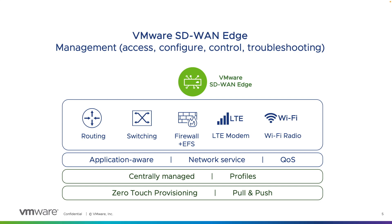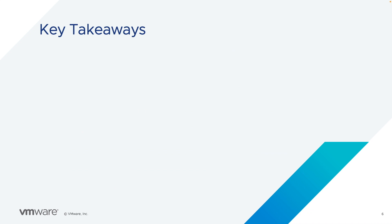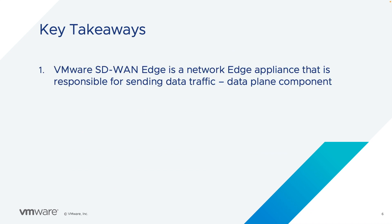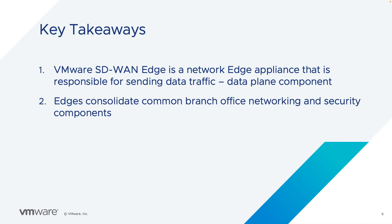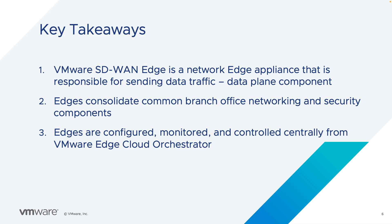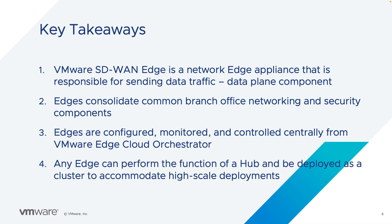This can all be centrally managed through VMware Edge Cloud Orchestrator to control how the edges are accessed, configured, monitored, and remotely troubleshot. The key takeaways for this video are that VMware SD-WAN Edge is a network appliance responsible for sending data traffic as the data plane component of SD-WAN. Edges consolidate common branch office networking and security capabilities. Edges are configured, monitored, and controlled centrally from VMware Edge Cloud Orchestrator. And finally, edges can be deployed as hubs and can be clustered to accommodate high-scale deployment requirements.